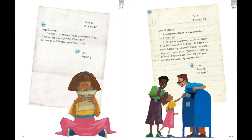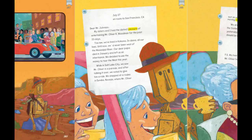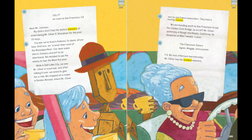Why is Uncle Ray worried about Oliver? Why do you think Tamika's mother keeps looking at family photos and saying, 'My baby brother!'? Why doesn't Uncle Ray get a letter about Oliver for a few weeks, and what clues in the text and illustrations support your answer? How does Melissa So feel about Oliver's safety? How do you know? Why did the Claremont sisters start their journey? Use first, next, then, and last to describe what has happened to them so far.